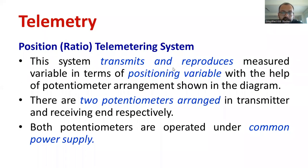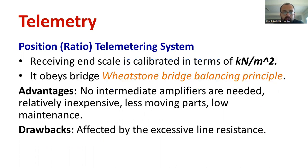As discussed, there is a transmitter side and receiving end side and the information will be passed through in the form of the positioning variables with the help of this potentiometer arrangement. Two potentiometers have been arranged at the sending end side and the receiving end side. Also, the two potentiometers operated in a common supply. These are the speciality. Here scale is calibrated in terms of kilonewton per meter square. If you want, you can calibrate in any other form because now we are giving an example related to pressure measurement.